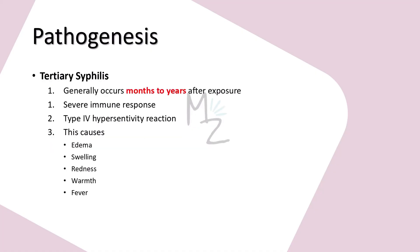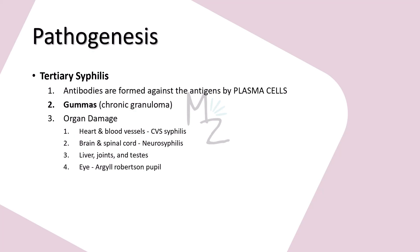Tertiary syphilis occurs months to years after exposure. With few spirochetes in blood, a severe immune response led by T cells and macrophages releases cytokines including tumor necrosis factor alpha, interleukin-1, and interleukin-6. This type 4 hypersensitivity reaction causes swelling, edema, redness, warmth, and fever. Plasma cells produce antibodies against antigens — group-specific antigens, species-specific antigens, and cardiolipin. Immune cells form granulomatous lesions called gummas — chronic granulomas surrounded by immune cells and fibroblasts — and the tissue inside becomes oxygen-deprived, resulting in coagulative necrosis.